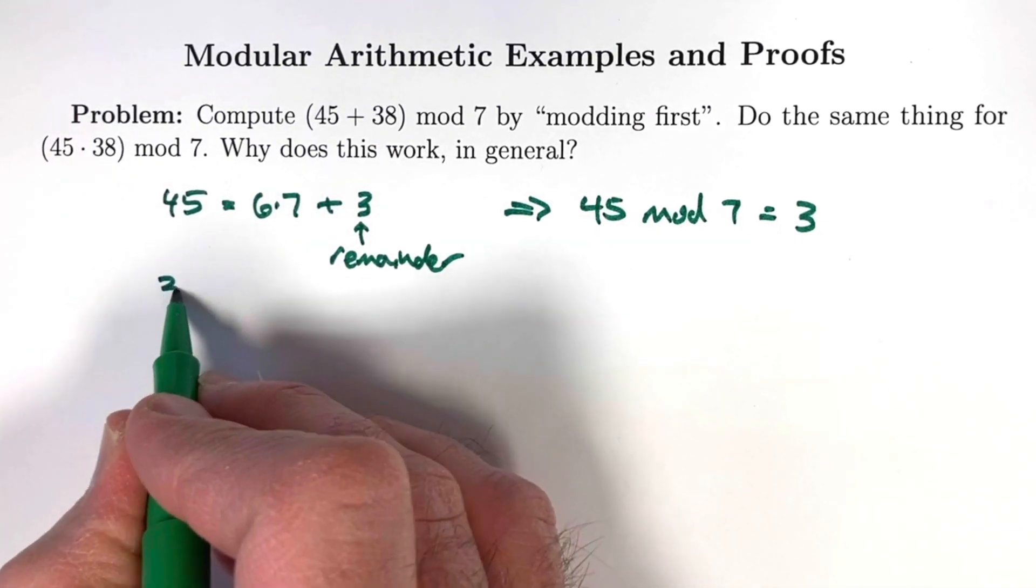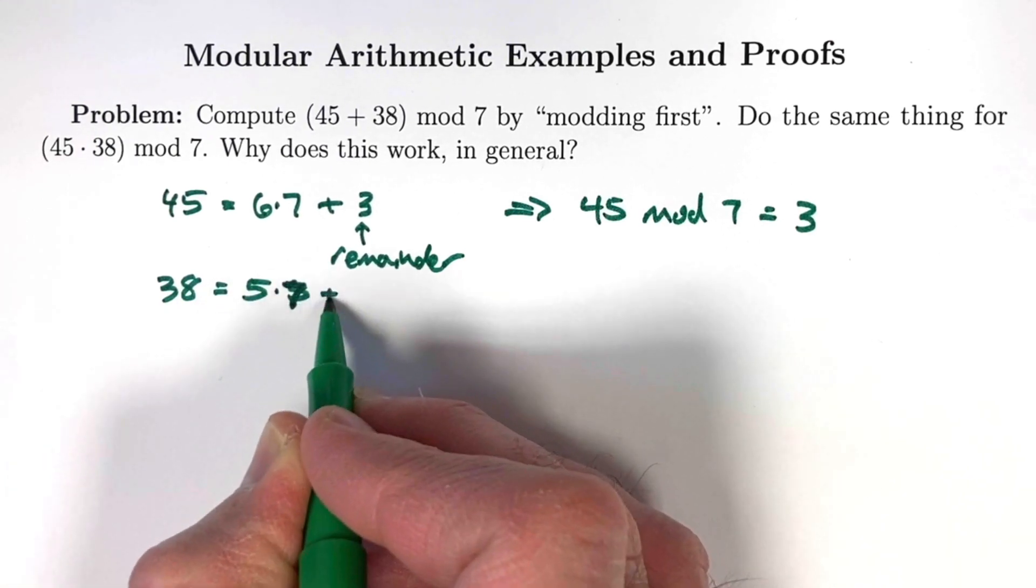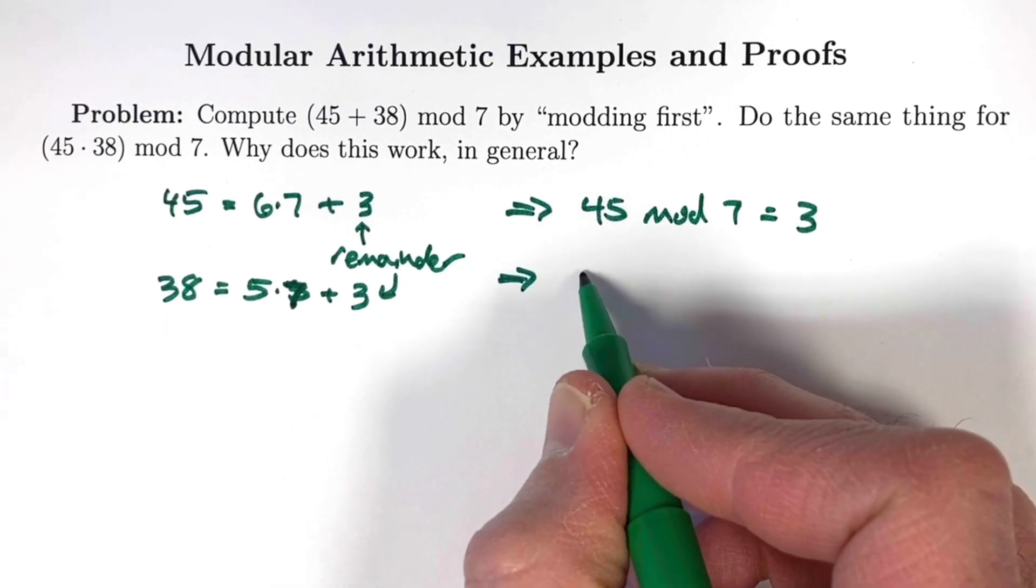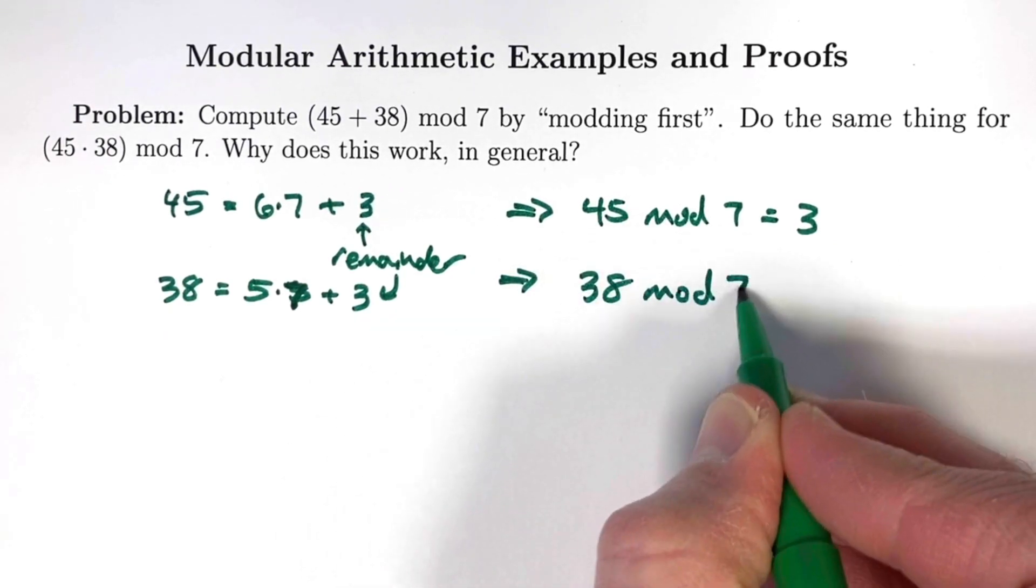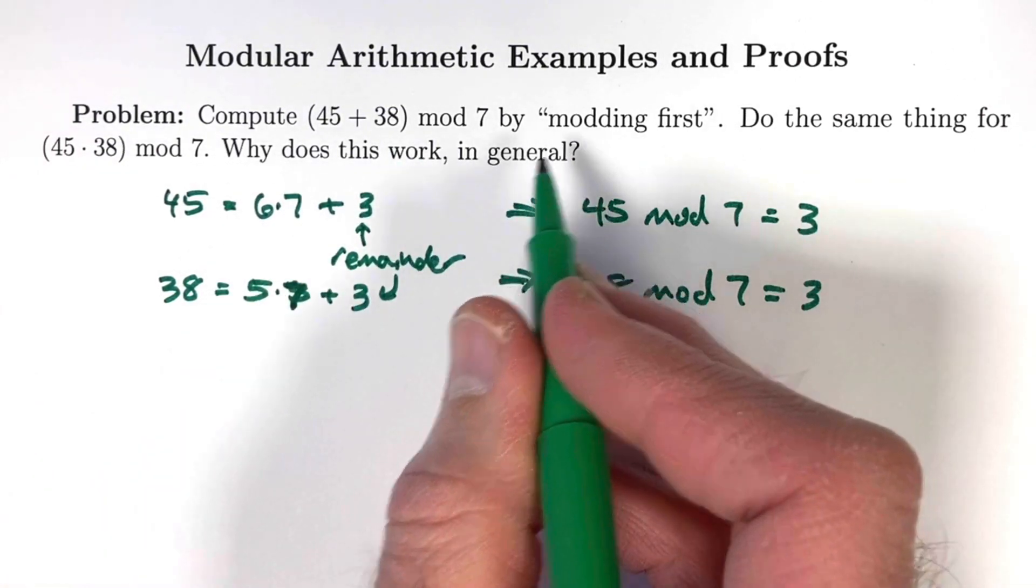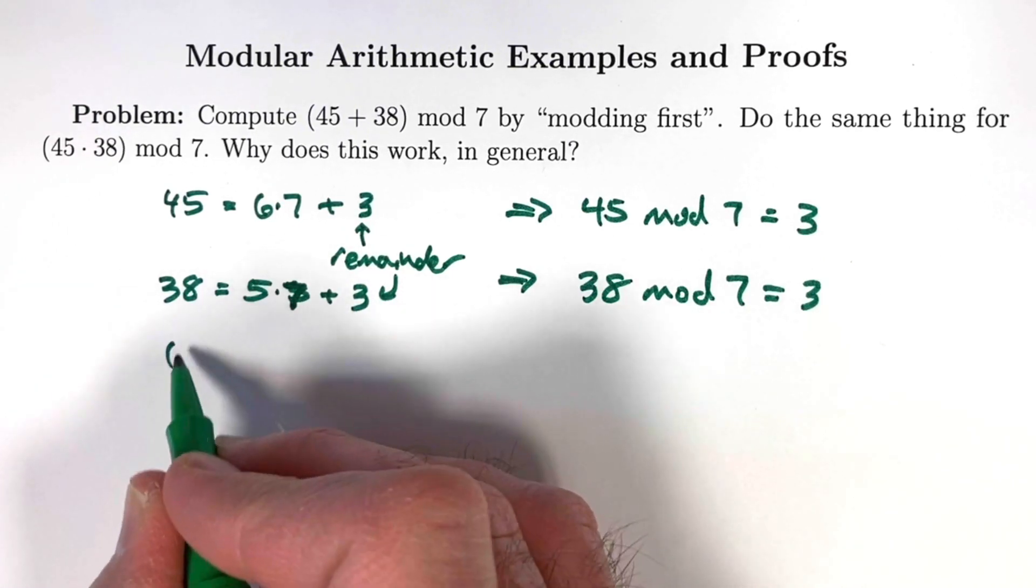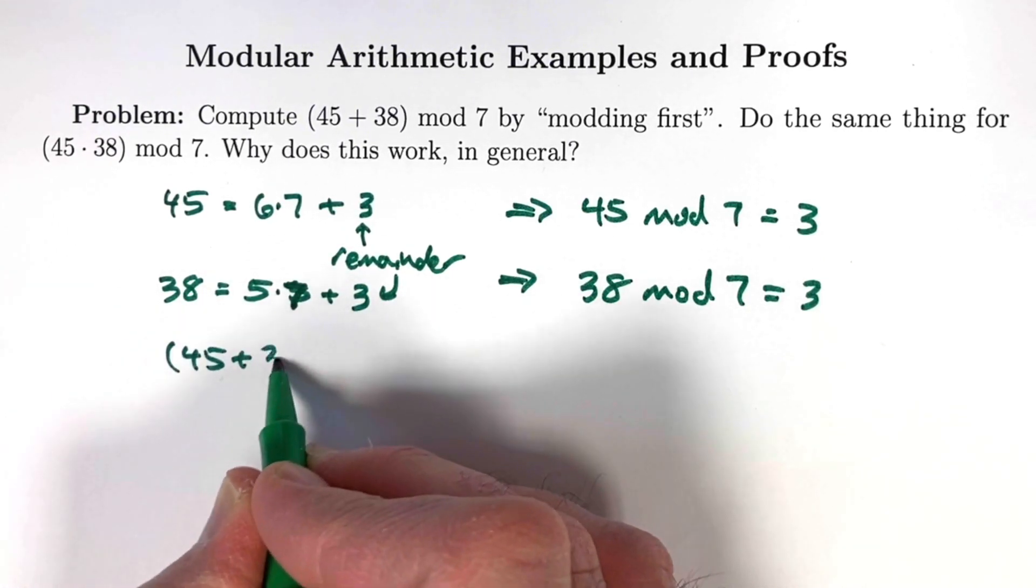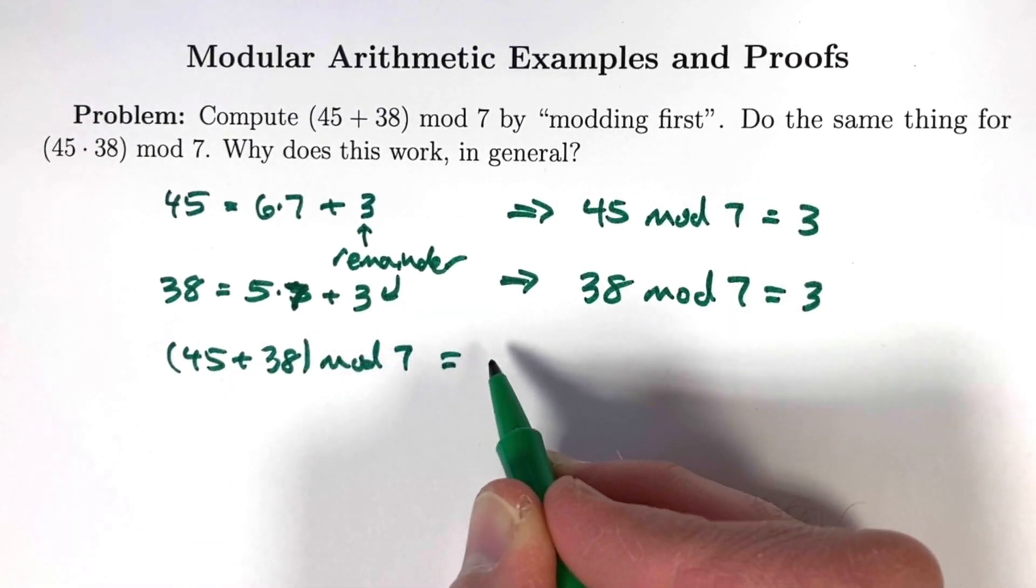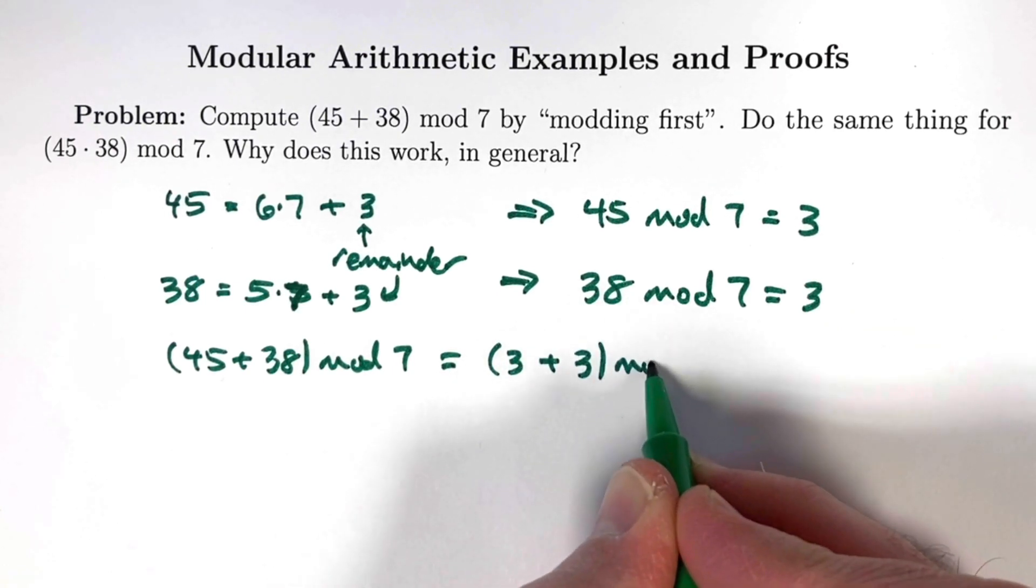A similar kind of thing happens with the 38. 38 is 5 times 7 plus 3. 3 is the remainder in that case, and that implies that 38 mod 7 also equals 3. So when you mod first, you are really converting these 45 and 38s to 3s. More formally, we can write that 45 plus 38 mod 7 will end up giving the same thing, though this takes proof, as 3 plus 3 mod 7.